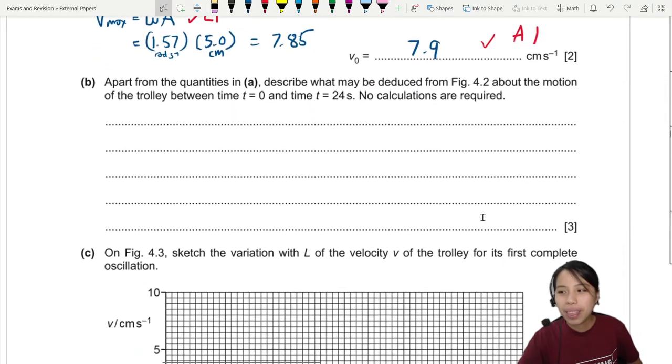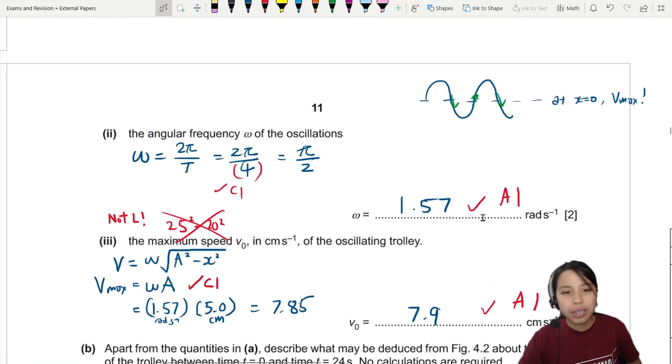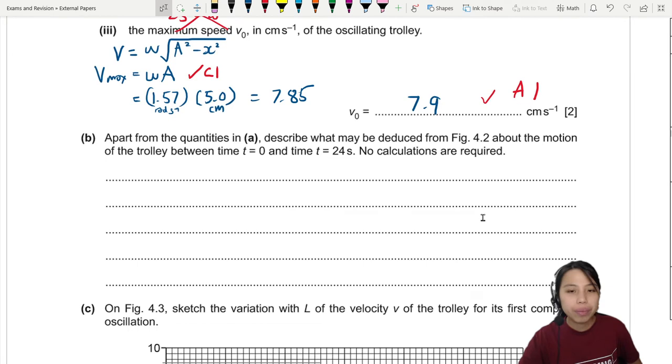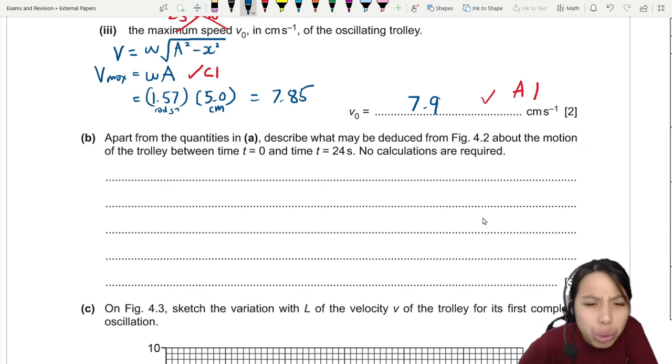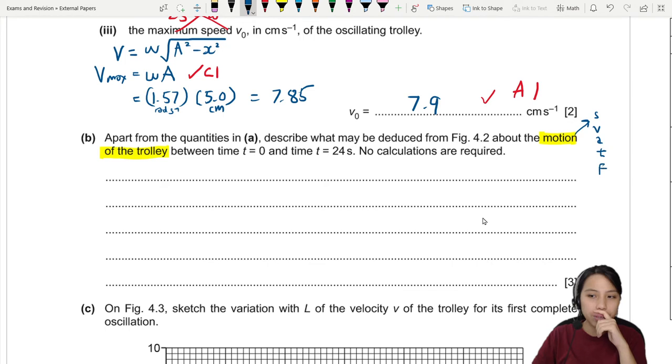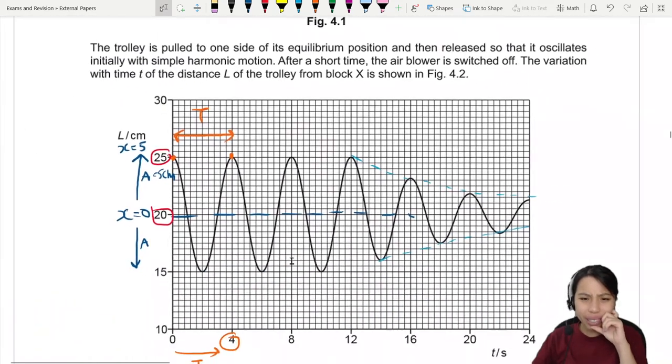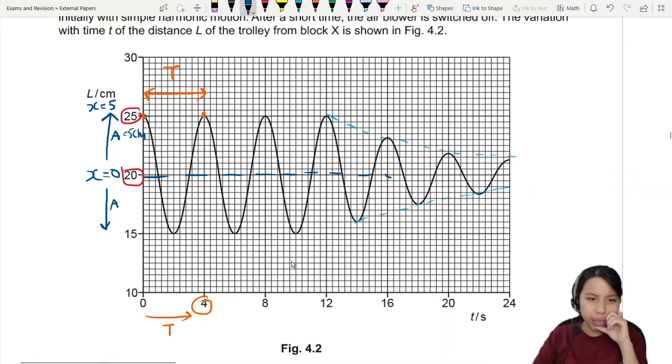Okay, the next part. Apart from the quantities in A, which is angular frequency, speed and amplitude, describe what may be deduced from the graph about the motion of the trolley between time t=0 and t=24. No calculations are required. This is a strange question. It's so vague. Motion of the trolley. Motion could be a lot of things. It could be displacement, velocity, acceleration, time, force. I don't know. What else can we see from the graph? So this question, I don't know. There's a lot of things we can talk about. You could talk about maximum displacement at 25. Oh, we already talked about amplitude. Cannot. You can talk about velocity.